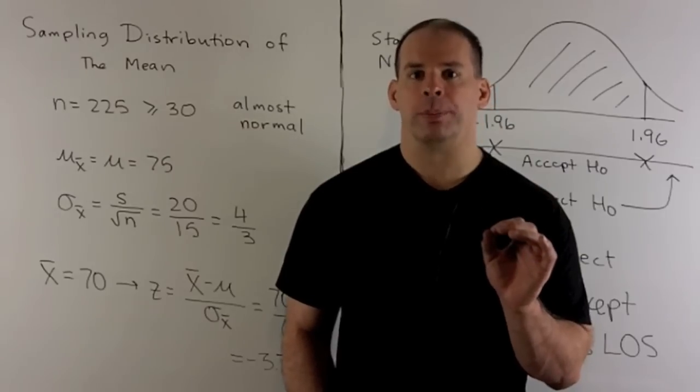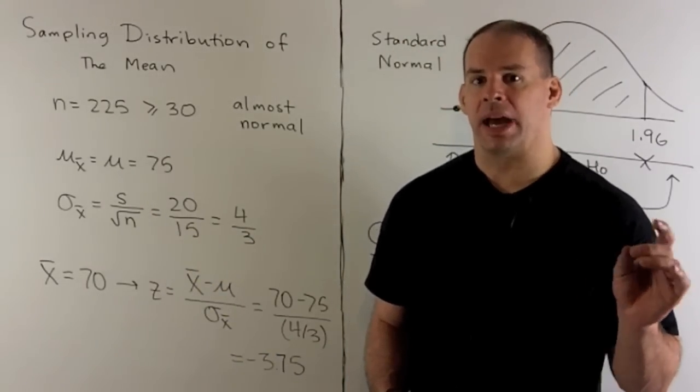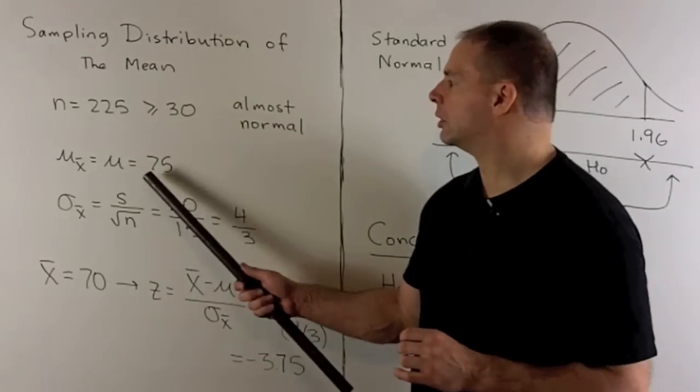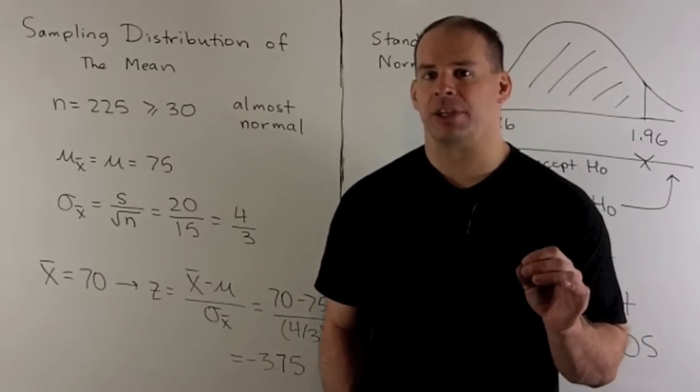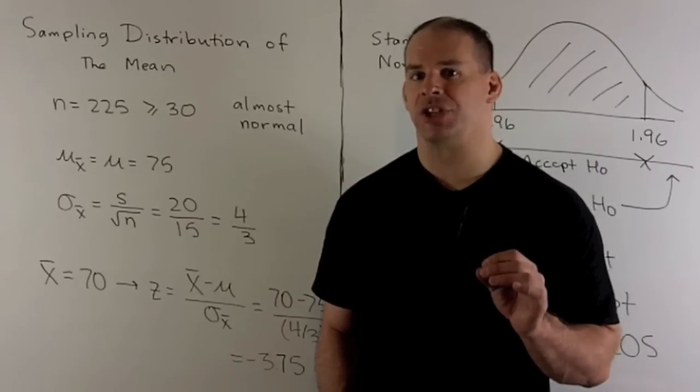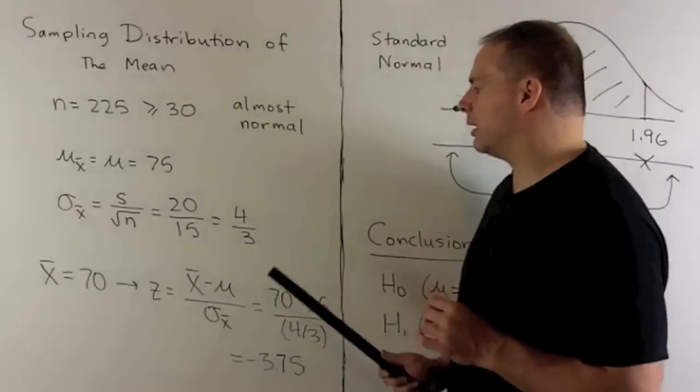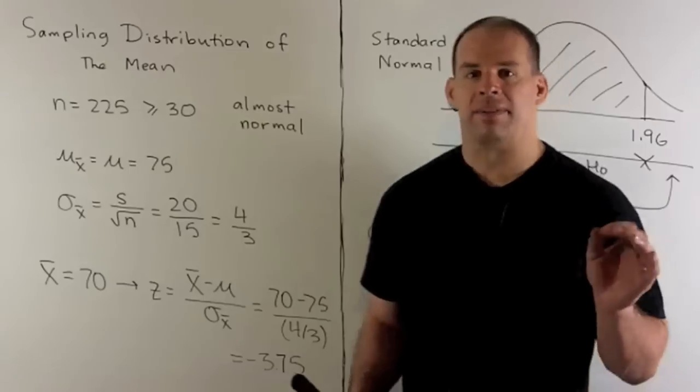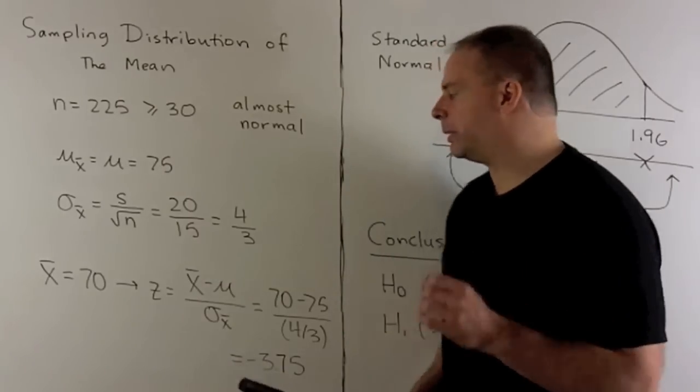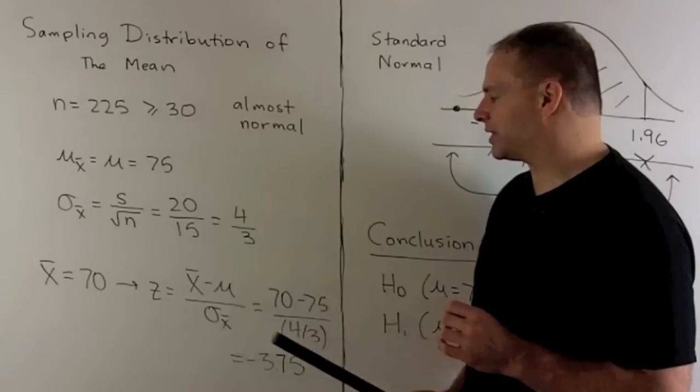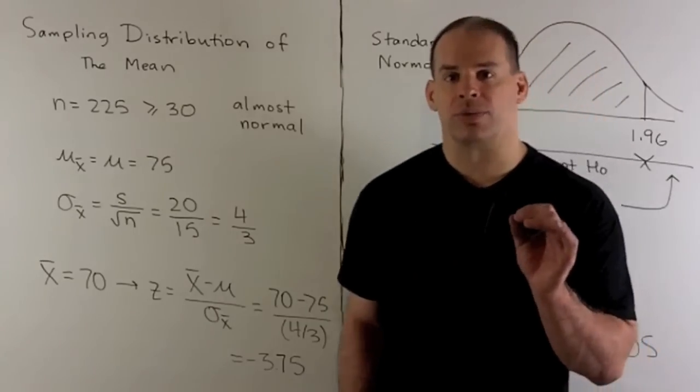Now, to get that z value, what do we need? I need the mean. That's going to be equal to our population mean. By assumption, that's 75. We need the standard deviation. n is large enough so that the population standard deviation is approximated by the sample standard deviation. We take that number, divide by the square root of the sample size. That's going to give me 4/3. Finally, our sample mean is equal to 70. So now we can find the z value. That's going to be x̄ - μ divided by σx̄. So it's going to give me -3.75. That's the number we use for our test.